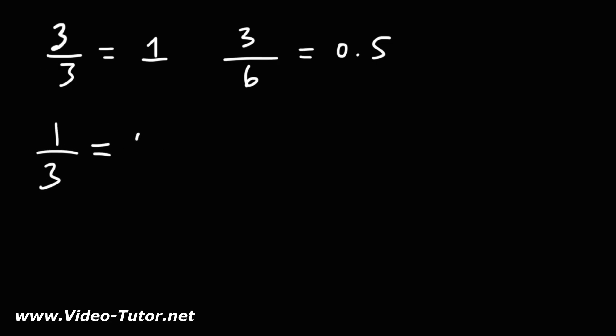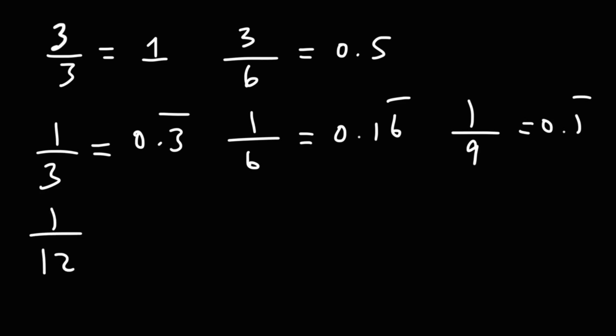We know that 1 over 3 is 0.3 repeating. 1 over 6 is 0.16 repeating. 1 over 9 is 0.1 repeating. And 1 over 12, I'm going to use a calculator for that, is 0.083 repeating. 1 over 15 is 0.06 repeating. And let's do one more. 1 over 18.